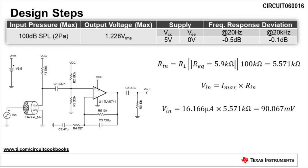The next step is to calculate the maximum input voltage. This is dependent on the equivalent input resistance, Rn, and the maximum microphone output current. Rn is calculated as R1 in parallel to REQ. Rn is calculated as 5.571 kilo ohms. Now we can calculate the maximum input voltage, Vn, which is calculated as Imax times Rn. Vn is calculated as 90.067 millivolts.